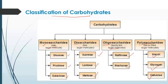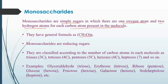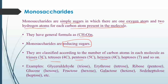Let's study monosaccharides in depth. Monosaccharides are simple sugars containing one oxygen atom and two hydrogen atoms for each carbon atom in the molecule. The general formula is CH₂O, and monosaccharides are reducing sugars. They can be classified as triose, tetrose, pentose, or hexose depending on the number of carbons: three carbons — triose; four carbons — tetrose; five carbons — pentose; and so on.